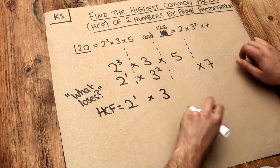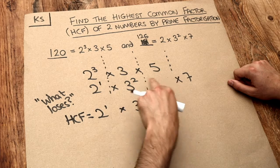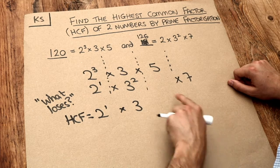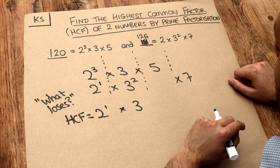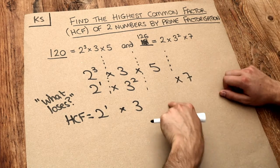Now what loses out of nothing and five? Well, nothing loses, so we put nothing at all. That's basically saying that these numbers don't both have a five in common, so we can't include the five in the highest common factor.